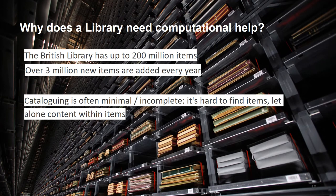Why does the British Library need computational help? As I noted earlier, we have a lot of items and approximately 3 million items are added every year. Cataloguing or describing these items is often minimal and incomplete, which means it's very difficult to find items sometimes, let alone things within the items.